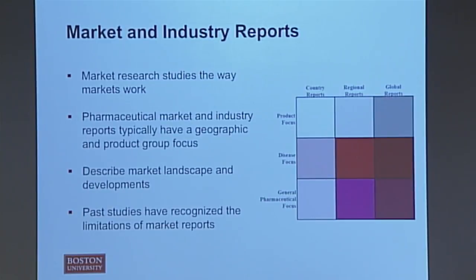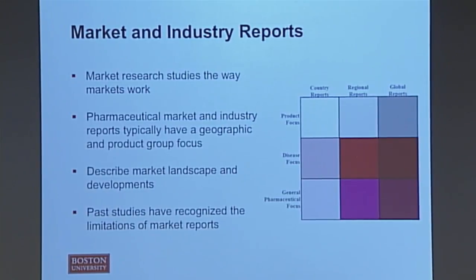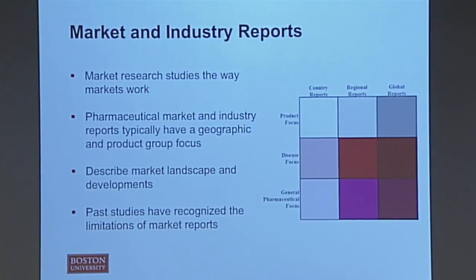All pharmaceutical market industry reports have a geographic and a product focus. Geographic is either a single country, a region — such as all of Africa or looking at specific countries like Brazil, Russia, India and China, the emerging markets — or it can be a global focus. The product focus is either a single product like insulin, a disease group like all diabetes products, or all pharmaceuticals. After looking at these reports, we also repeatedly saw the limitations that have been identified in past studies, including our study of the global insulin market, and proceeded to develop our assessment tool.